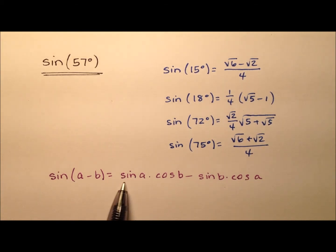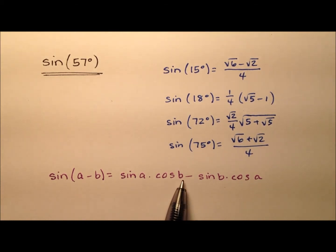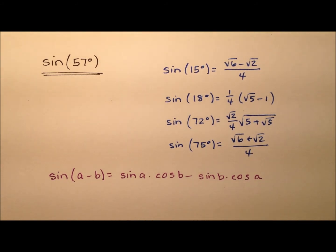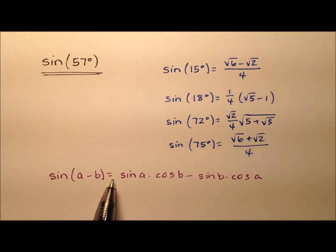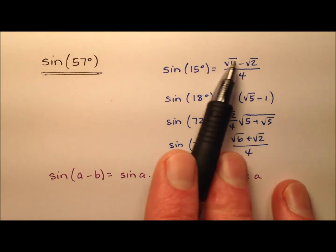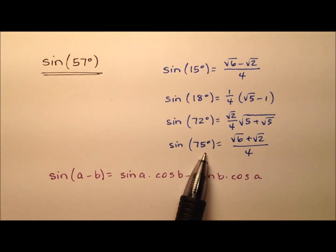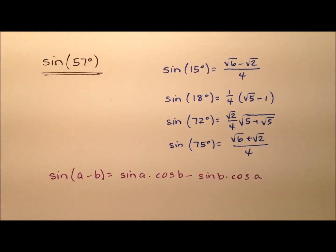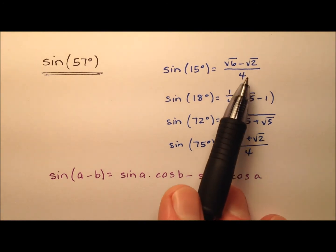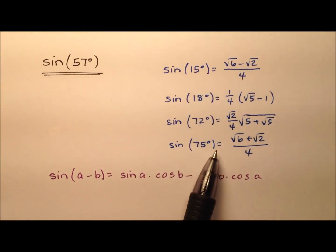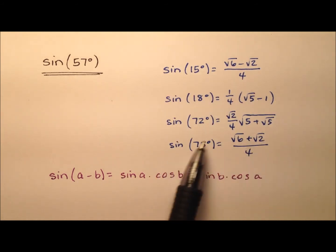It's the sine of a, which is the first angle, times the cosine of b, which is the second angle, minus the sine of b times the cosine of a. In this formula, we're going to include four values of sine, and these four values I've gone ahead and worked out from scratch in previous videos, so you can find those videos linked in the description.